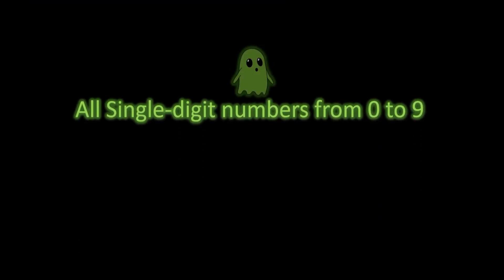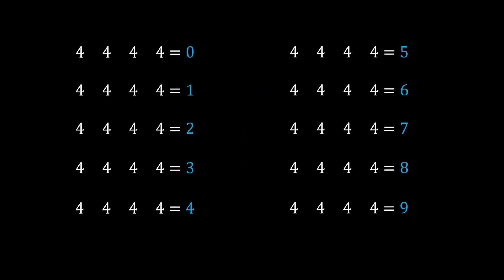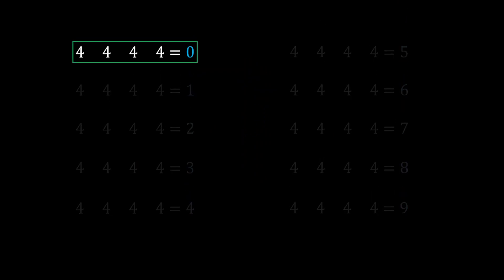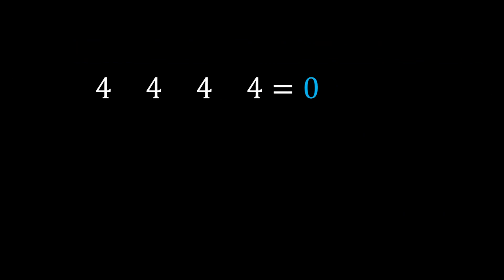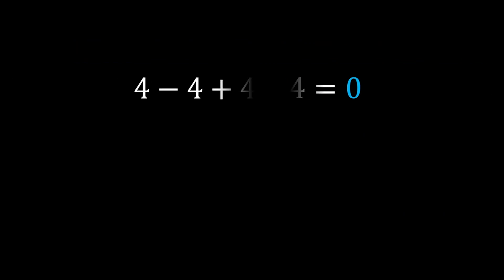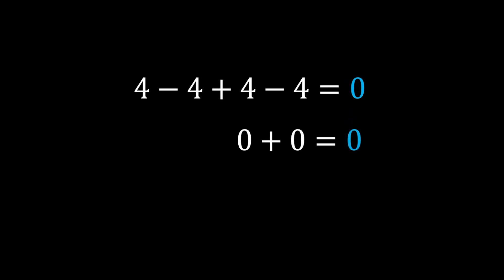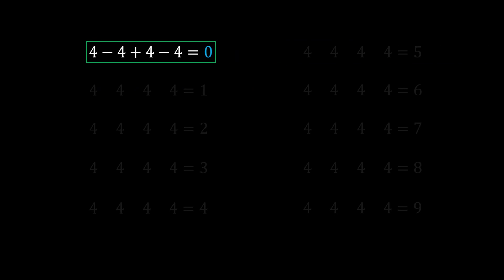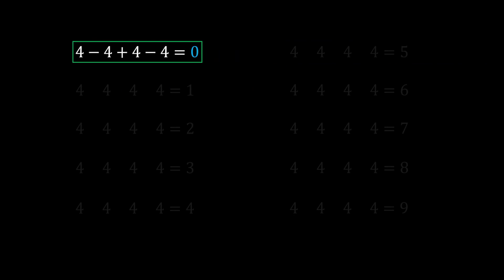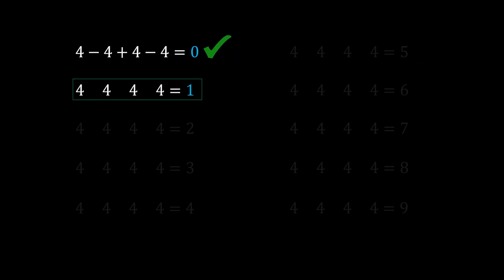Let's check all single-digit numbers from 0 to 9, starting with 0. It's pretty easy: 4 − 4 + 4 − 4 = 0 + 0 = 0. Next, number 1: we can do 4 − 4 + 4 ÷ 4, which is 0 + 1 = 1.